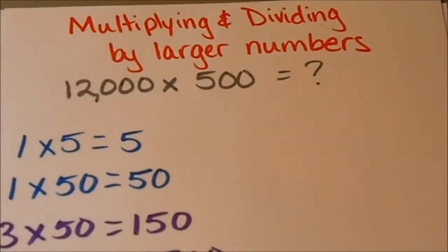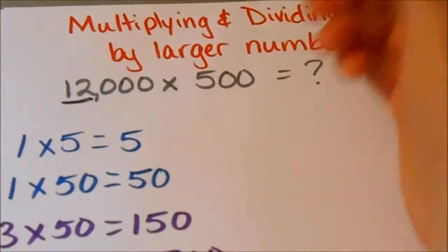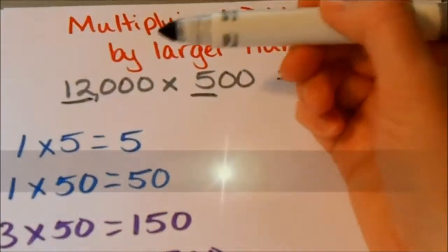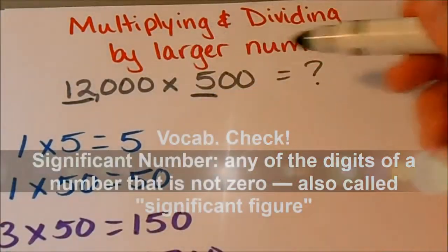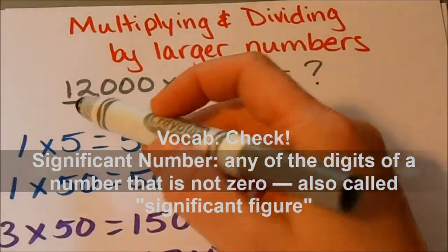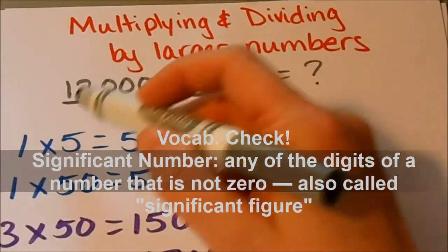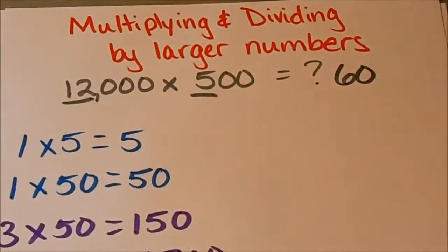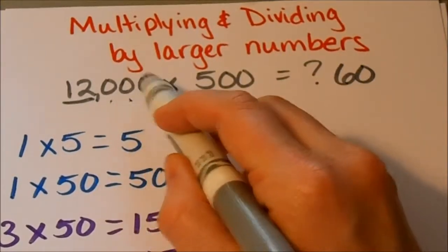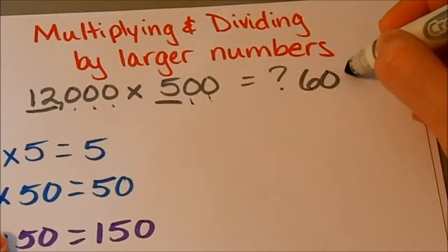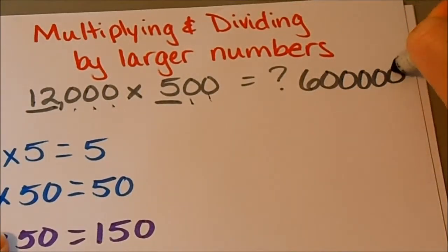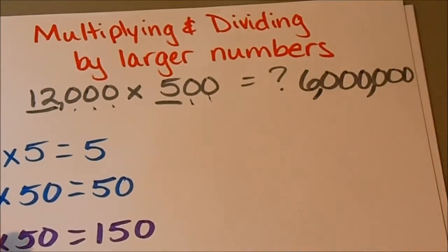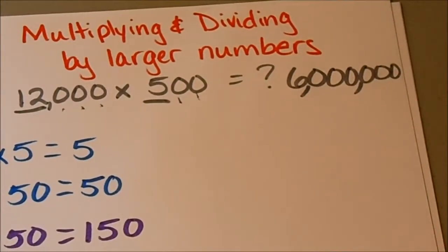Now let's go back to our original problem: 12,000 times 500. Now that I've shown you this trick, it's not so difficult. My significant numbers — which are any numbers that are not a zero in a problem — are 12 and 5. 12 times 5 is 60. And then I've got 5 zeros to add on. I stick in my commas afterwards and I come up with 6 million.